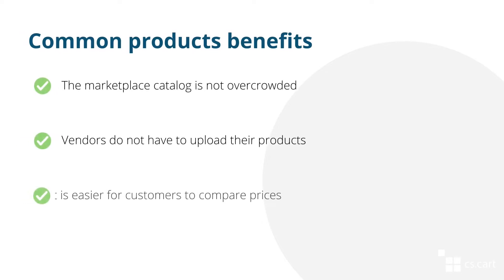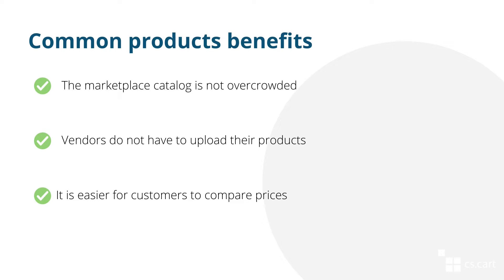Multi-Vendor Plus has a functionality called Common Products for Vendors. This functionality provides several benefits. First, the marketplace is not overcrowded by similar products from different vendors. Second, it is easier for vendors to start selling products because they don't have to add their products to a marketplace. And finally, on the product detail page, customers can see the list of all vendors that sell the product and choose the one that suits them the best.